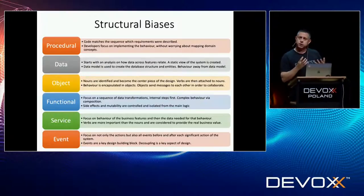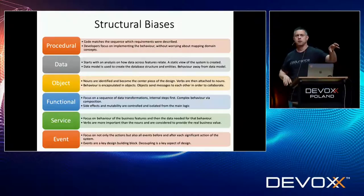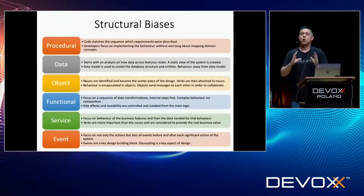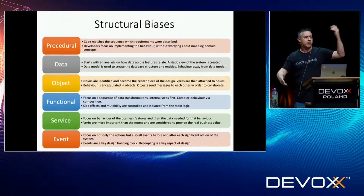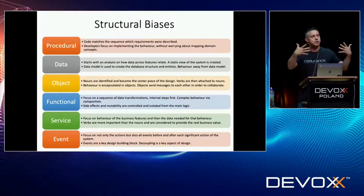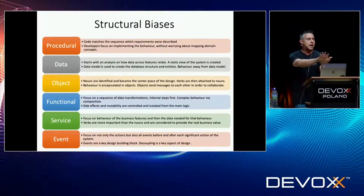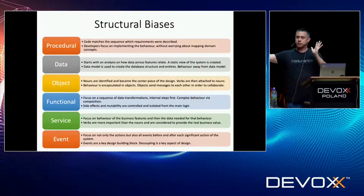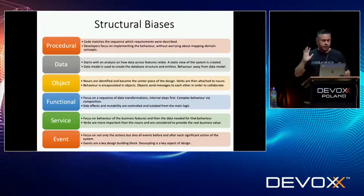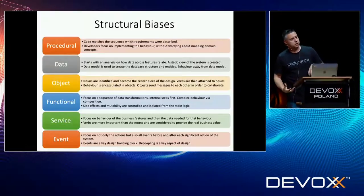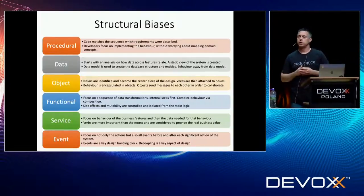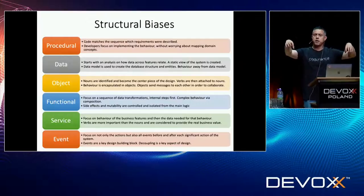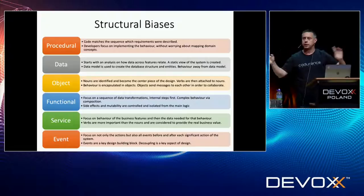On the data side, when I went to university in 1994, there was a lot of focus on data. Before starting the project, you would model the data — entities and relationships, one-to-many, many-to-many. You come up with a data model first, which is a static view of your system, and then entities emerge from the data model. The object design is different: you go to the requirement documents, look for nouns and verbs, the nouns become the centerpiece of your domain, you plug the verbs in, and objects send messages to each other.